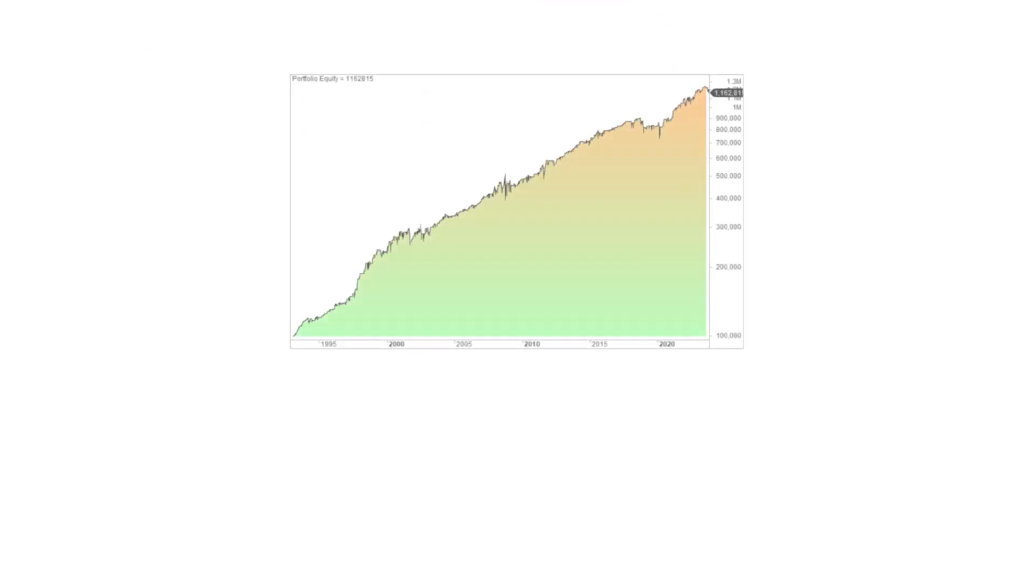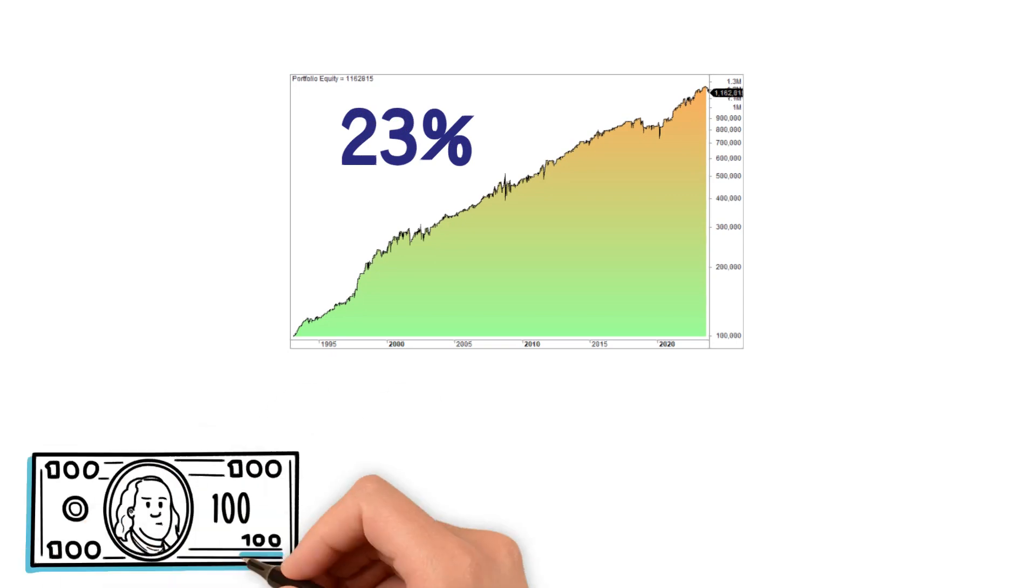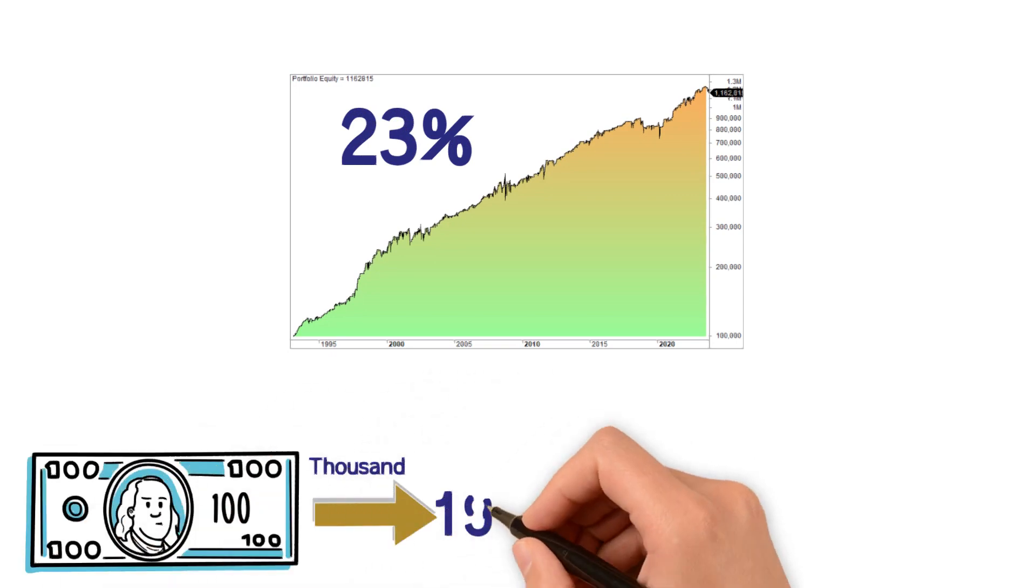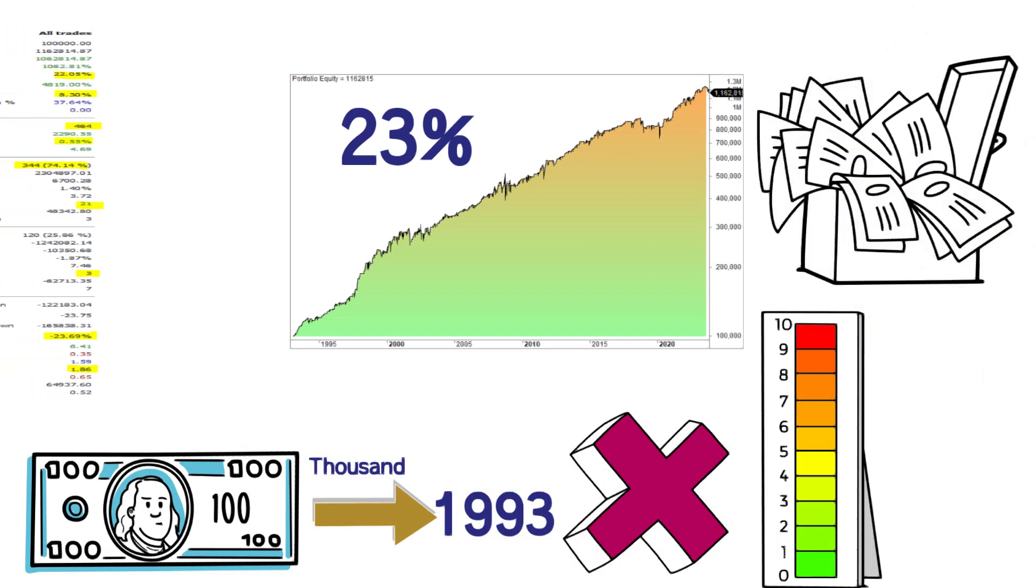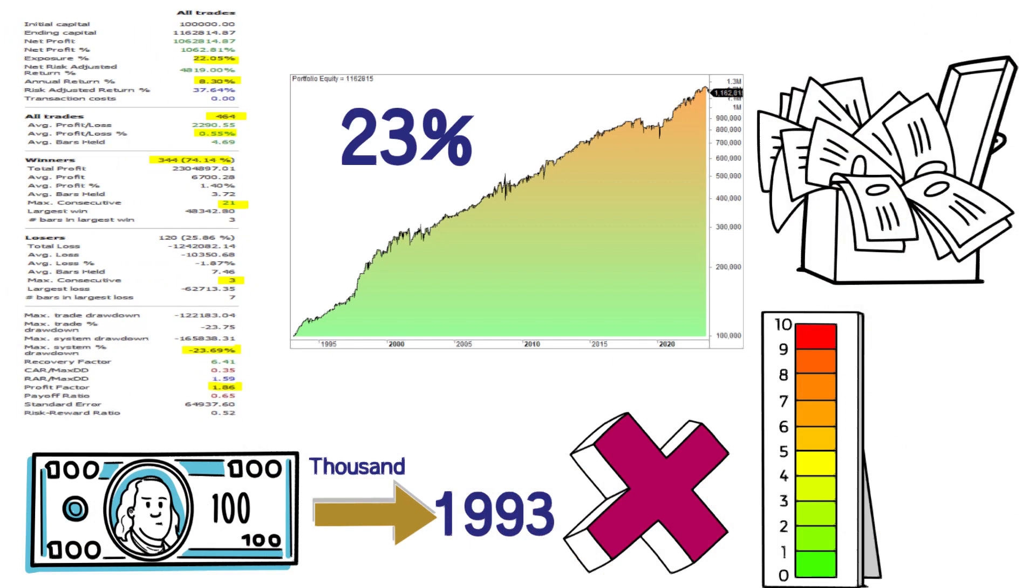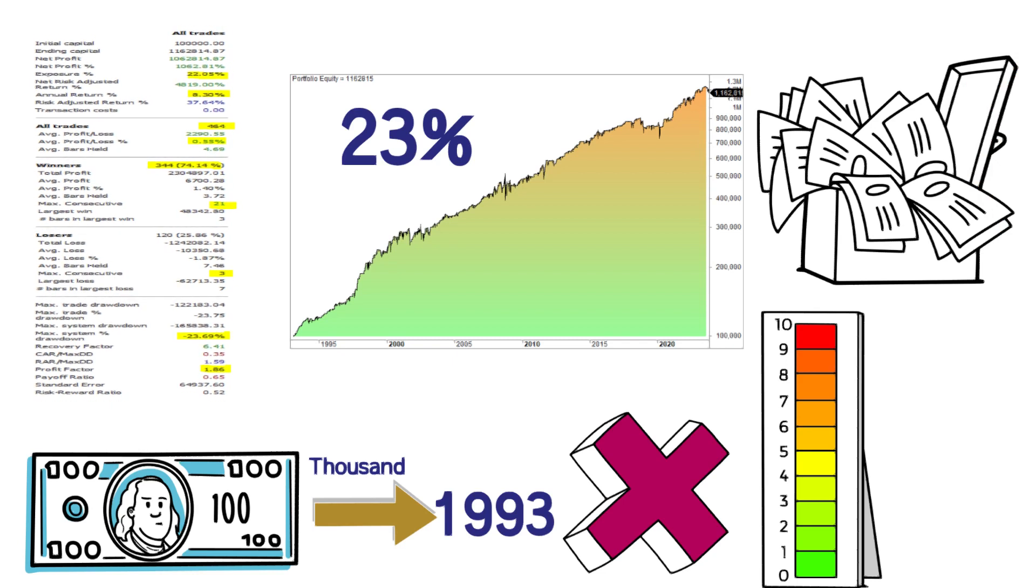The equity curve is linear and the max drawdown is modest at 23%. 100,000 in 1993 would have multiplied your equity 10 times by now to over 1 million. The trading performance and statistics are pretty solid but there are many trades, 464 in total.